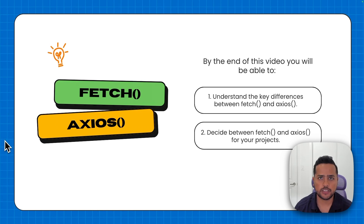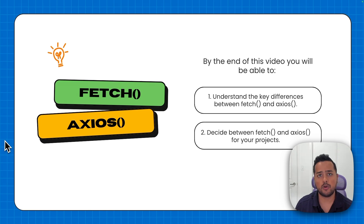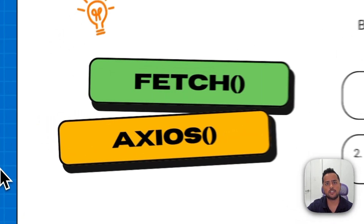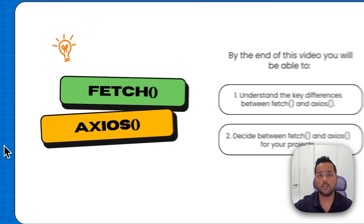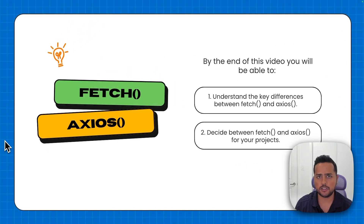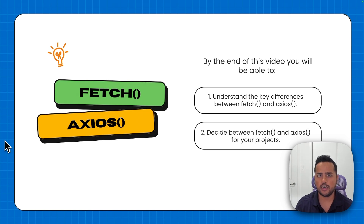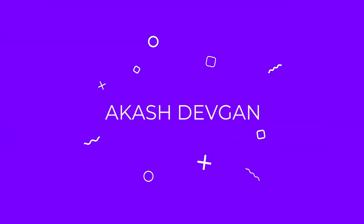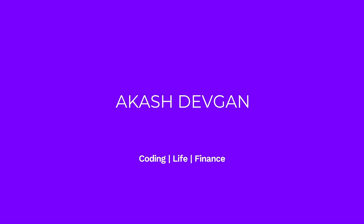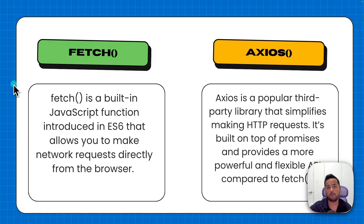Welcome back to the channel. In this video we'll be comparing two of the most popular ways of making API calls in JavaScript: fetch and axios. By the end of this video you will know the key differences between the two and be able to make the decision of which one you should be using in your next project.